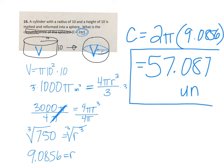Linear units for circumference, not squared or cubed. So 57.087 units is the distance around that sphere.